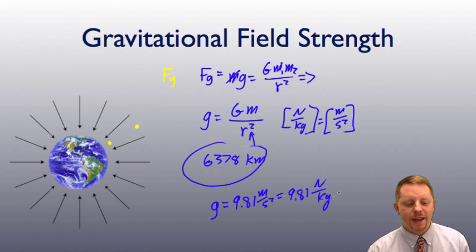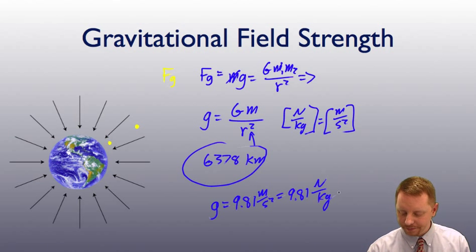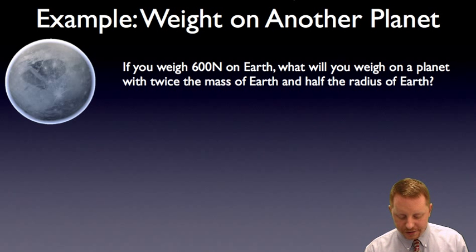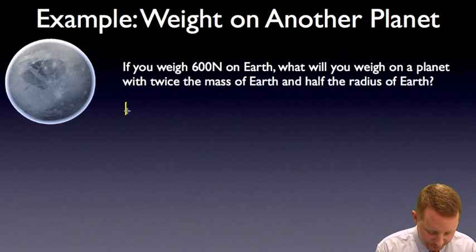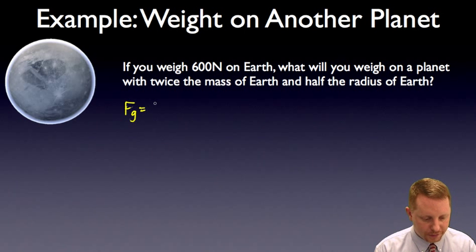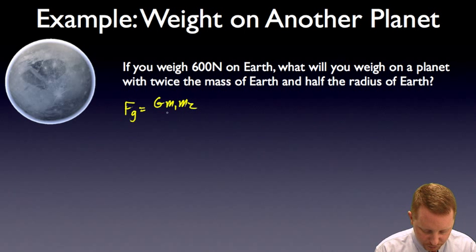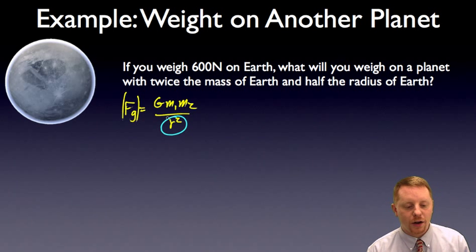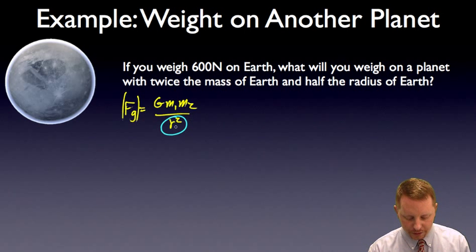Gravitational field describes what would happen to a mass placed in the vicinity of an object applying a gravitational force to it. For example: if you weighed 600 newtons on Earth, what would you weigh on a planet with twice the mass of Earth and half the radius of Earth? The force of gravity magnitude is G m1 m2 over r squared — an inverse square law because of that r-squared dependency. If the separation between the masses is doubled, the force is quartered.